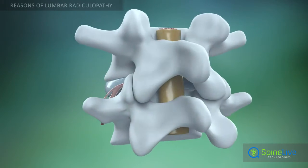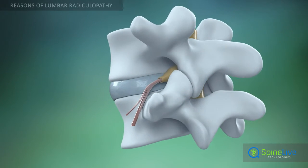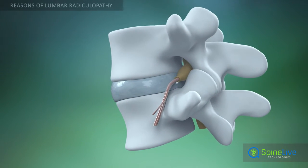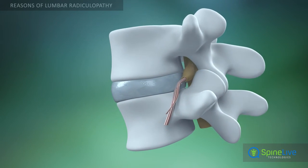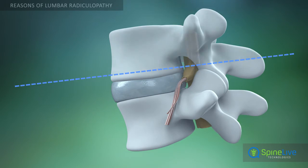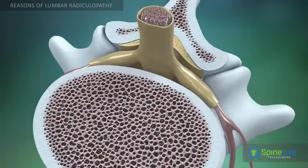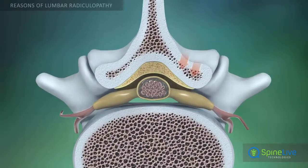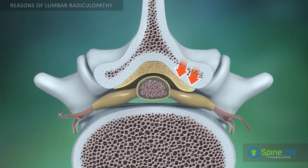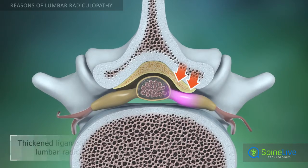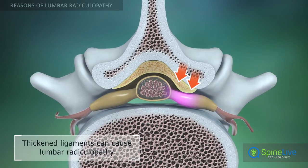With age, ligaments that bind the spine together become thickened and stiff. This condition can cause bulging ligaments into the spinal canal, compressing intervertebral nerves in the lumbar region.